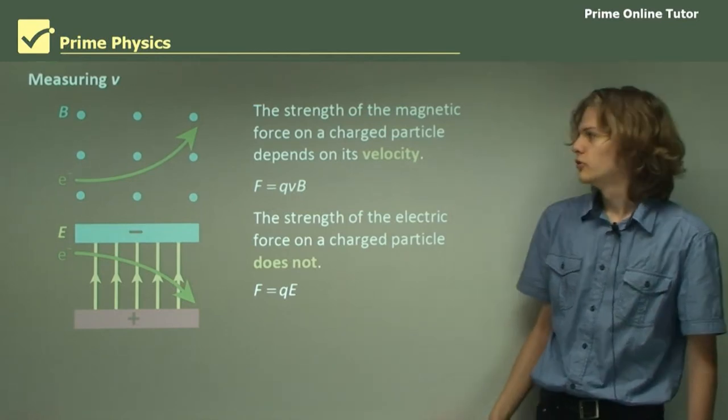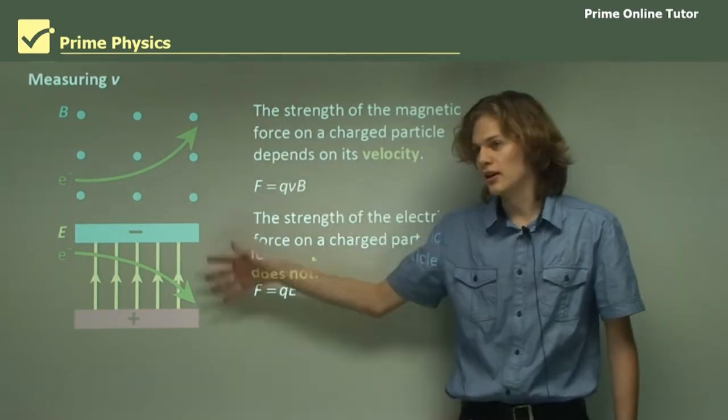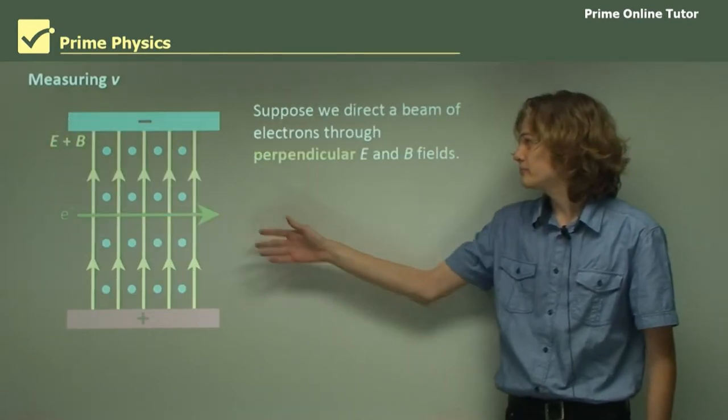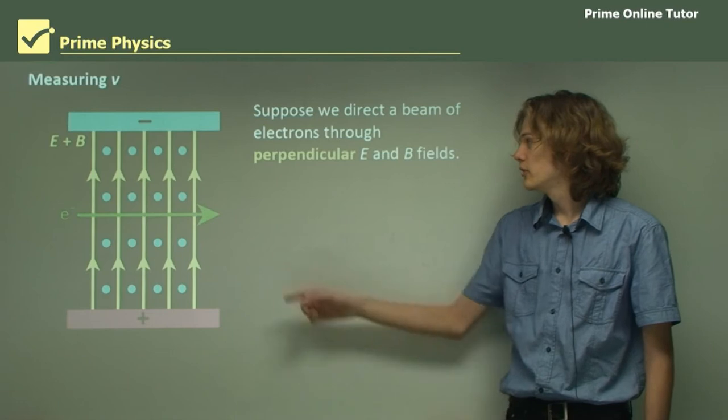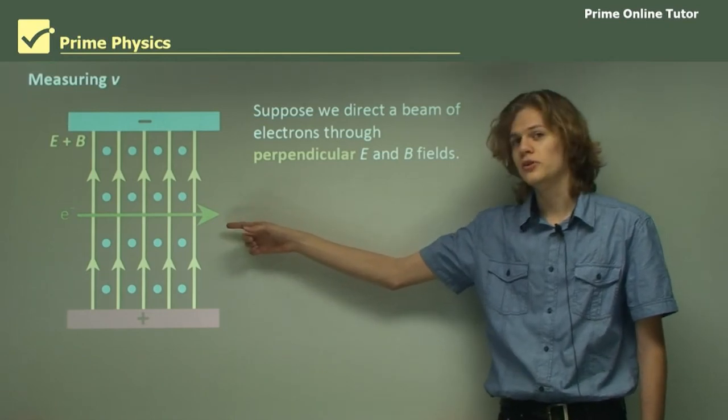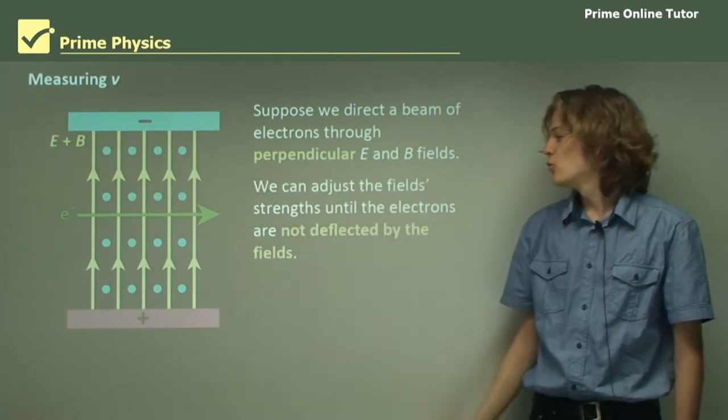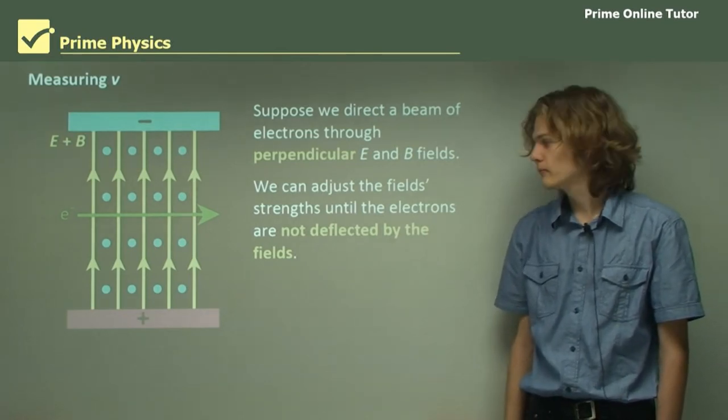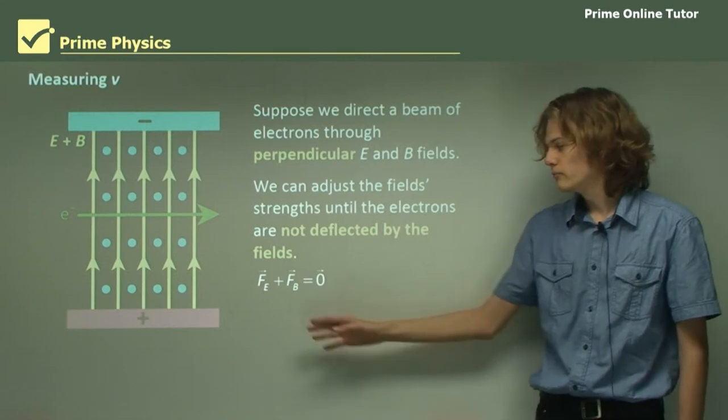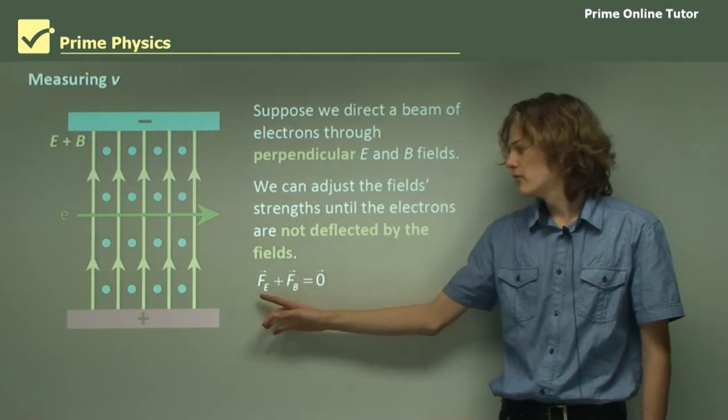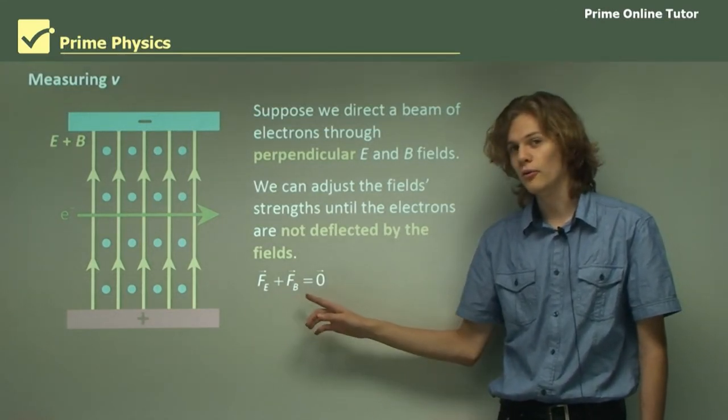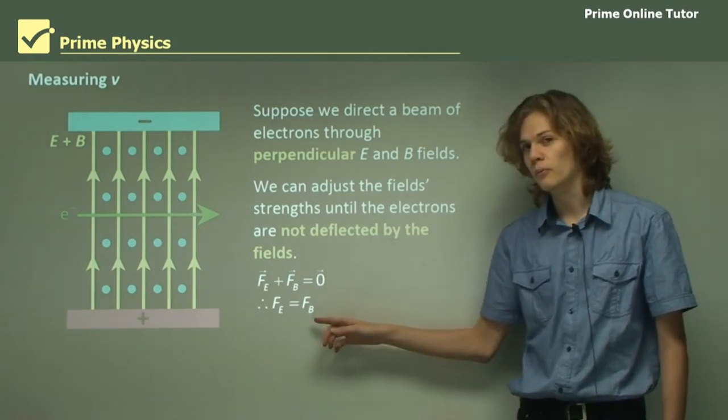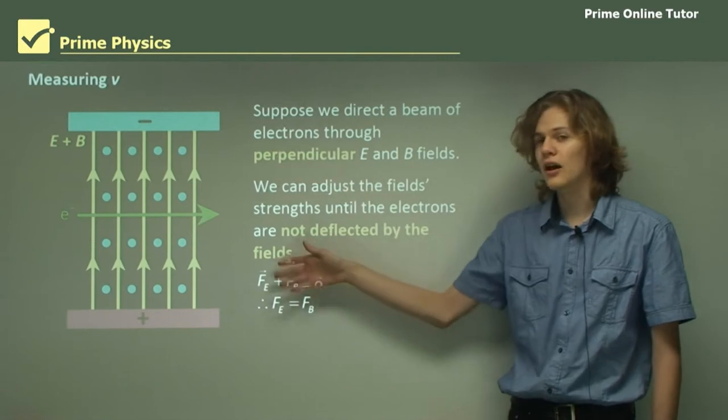Suppose we take both of these setups and we put them together so that we end up with something like this. We have a beam of electrons going perpendicular to E and perpendicular to B. We can adjust the strength of the fields until the electrons are not deflected by the fields at all.